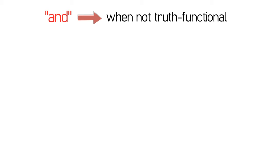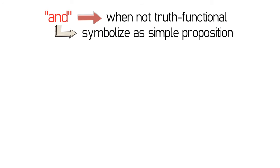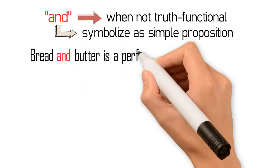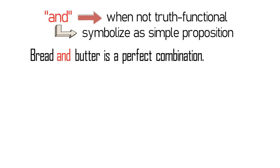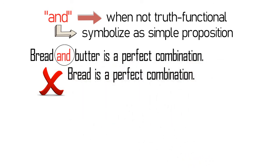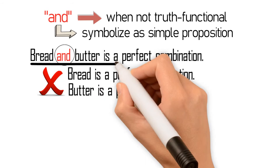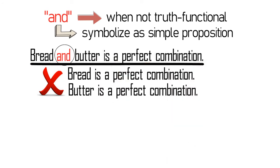It is important to note that sometimes the word 'and' is not truth-functional — that is, it does not connect two independent propositions. If this occurs, we should symbolize the proposition simply as a simple proposition. Consider this example: 'Bread and butter is a perfect combination.' The 'and' here is not truth-functional because we cannot say 'bread is a perfect combination' and 'butter is a perfect combination' separately. Hence the proposition is symbolized simply as P.